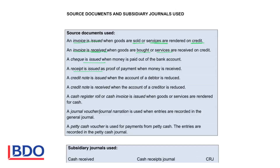A credit note is issued to your debtors to reduce their accounts because they returned goods, a mistake was made on the invoice, or the goods were damaged when delivered to the debtor. So there are various reasons why you want to reduce a debtor's account, and you do that with a credit note.